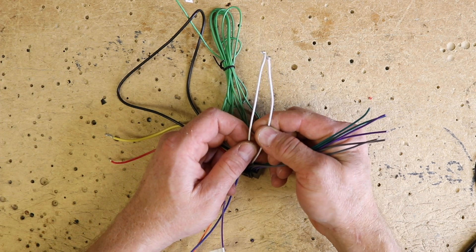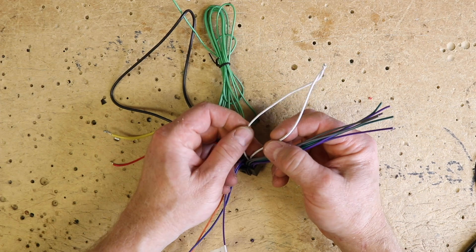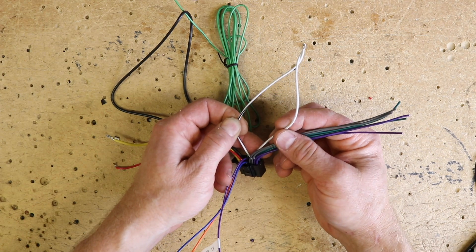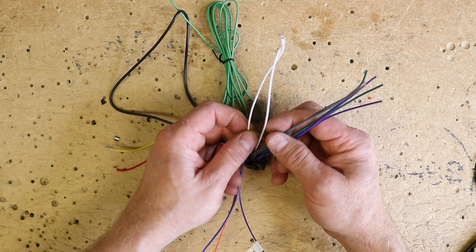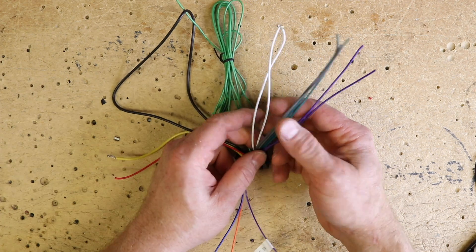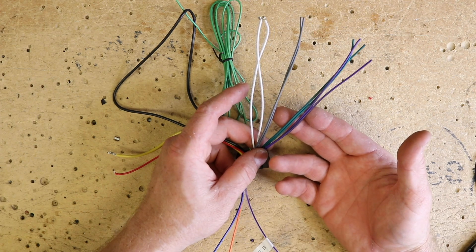Now each one of these is going to have a solid as well as a striped. The stripe is negative on all of them, so you have white and white black. White is positive, white black is negative. And that's going to be true for all eight speaker wires.